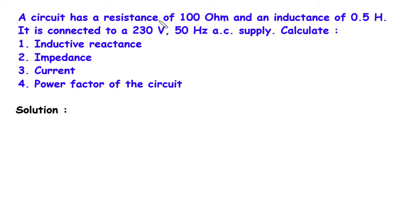A circuit has a resistance of 100 ohm and an inductance of 0.5 henry. It is connected to a 230 volt 50 hertz AC supply. Calculate: number 1, inductive reactance; number 2, impedance; number 3, current; and number 4, power factor of the circuit.